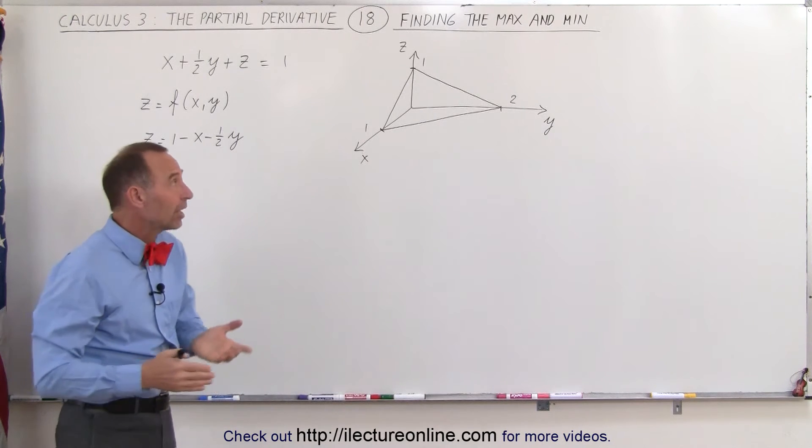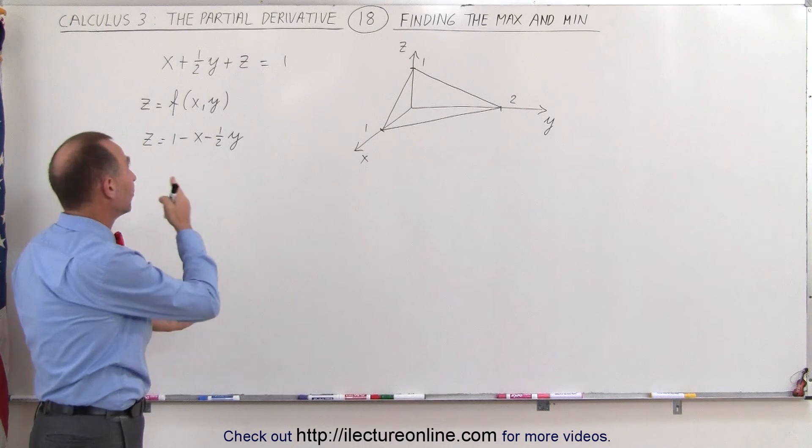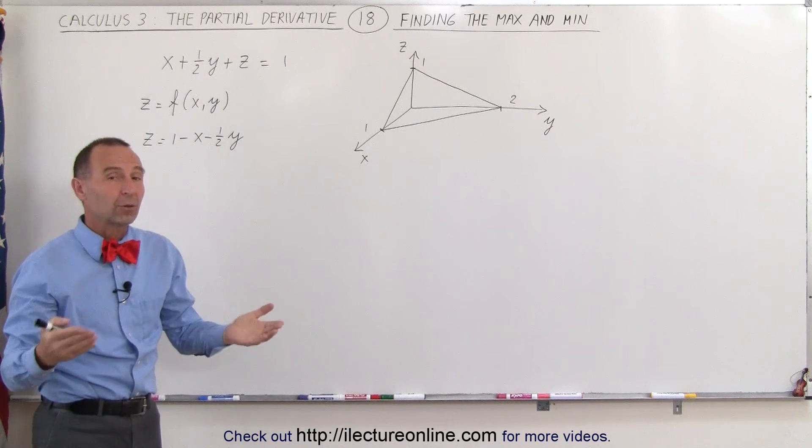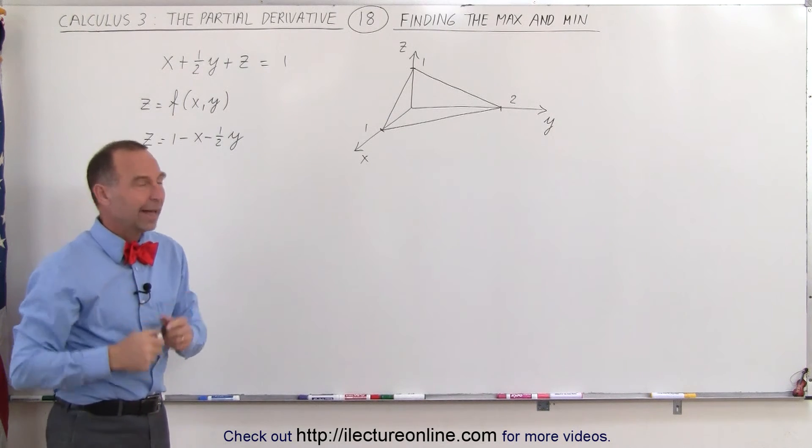So what we're going to do now is take the partial derivative of the function with respect to x and the partial derivative of the function with respect to y, set those equal to 0, and see what we get.